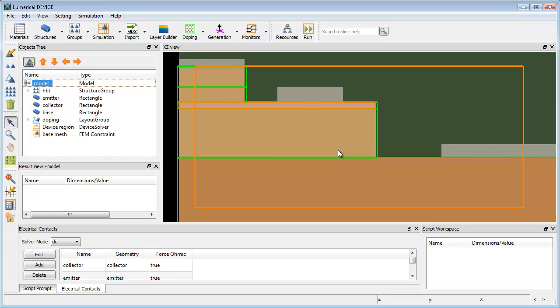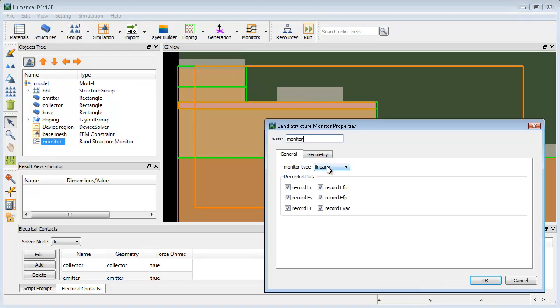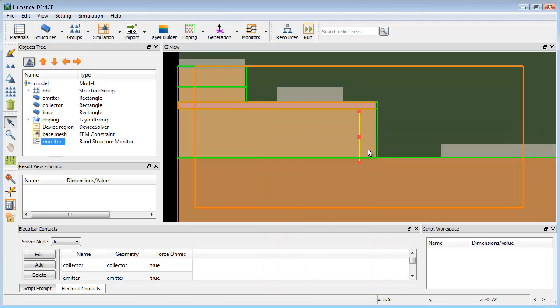To conveniently record the band structure for analysis, I will add a band structure monitor from the monitors menu. Editing its properties, I will orient the monitor in the z-direction, and I will choose the essential data for the results analysis. I'm going to then position the monitor so that it makes a vertical cut through the emitter, base, and collector layers.